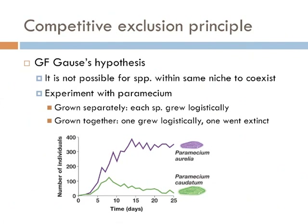To test this hypothesis, G.F. Gauss conducted an experiment with the protist paramecium. He grew two different species separately, and they grew logistically as expected by population ecological models. However, when he grew the paramecium species together, one grew logistically as predicted and the other went locally extinct. In other words, Gauss suggested that complete competitors cannot coexist.